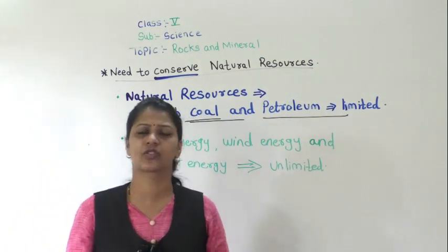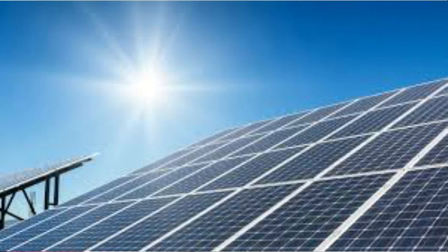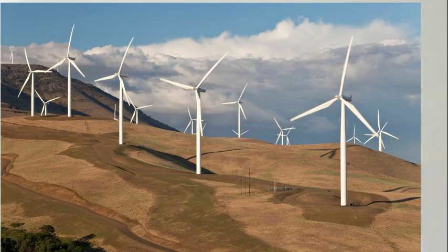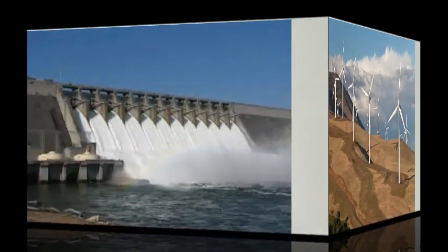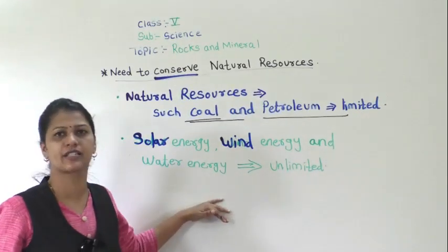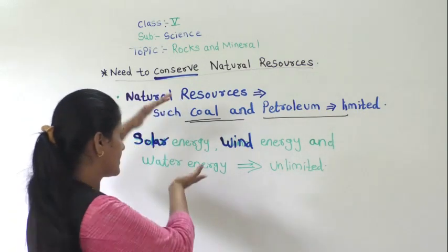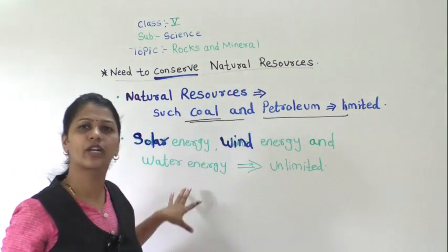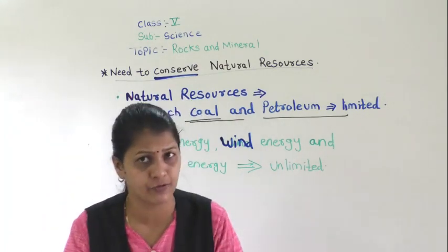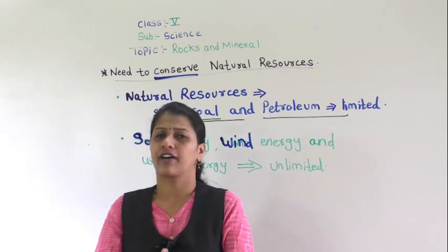Instead of using limited resources, we can use natural resources which are unlimited in nature — for example, solar energy, wind energy, and water energy. These are unlimited in nature and are not harmful. They cannot pollute our environment.